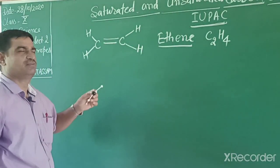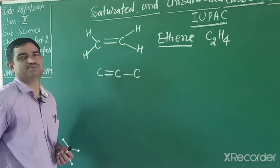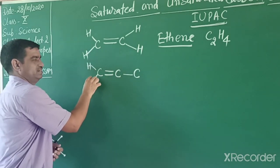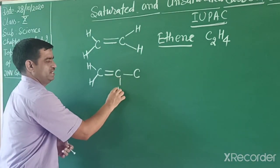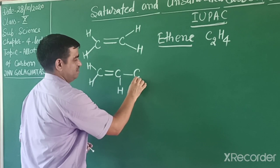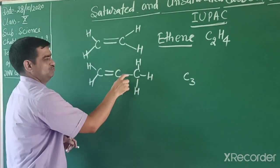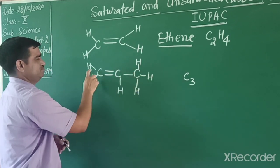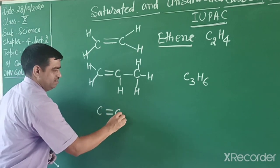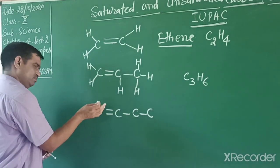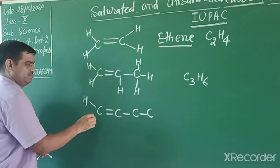For three carbons with a double bond, we first make the double bond then add one more carbon, completing remaining valencies with hydrogen. The middle carbon with double bond on one side and single bond on the other can attach only one hydrogen, while the end carbon attaches three hydrogens. The formula is C3H6. For four carbons with a double bond, the formula is C4H8.